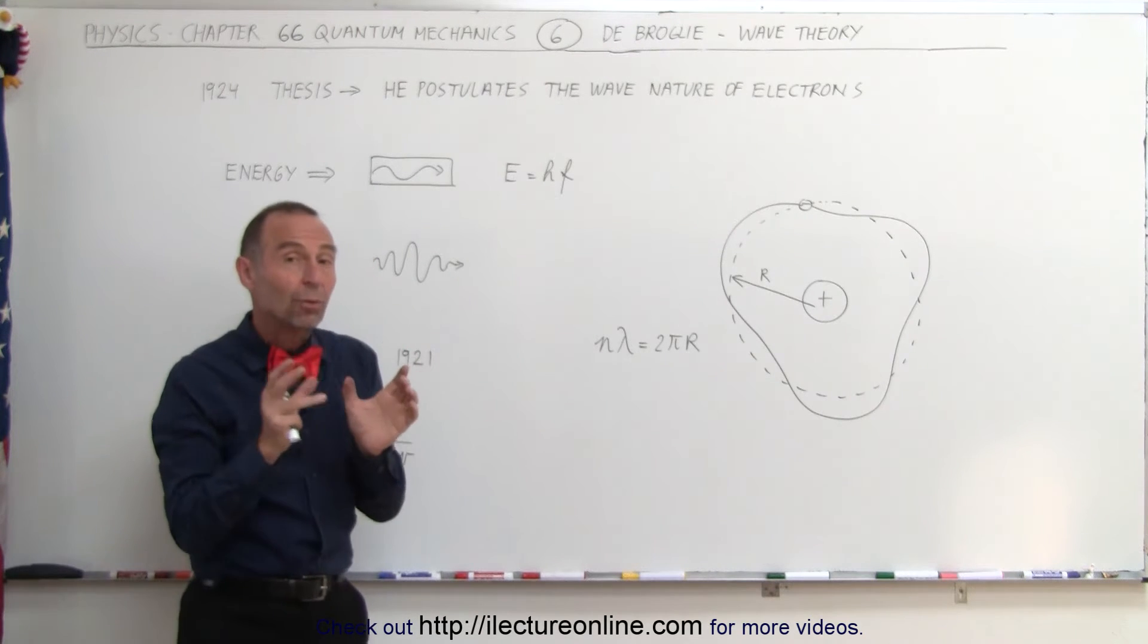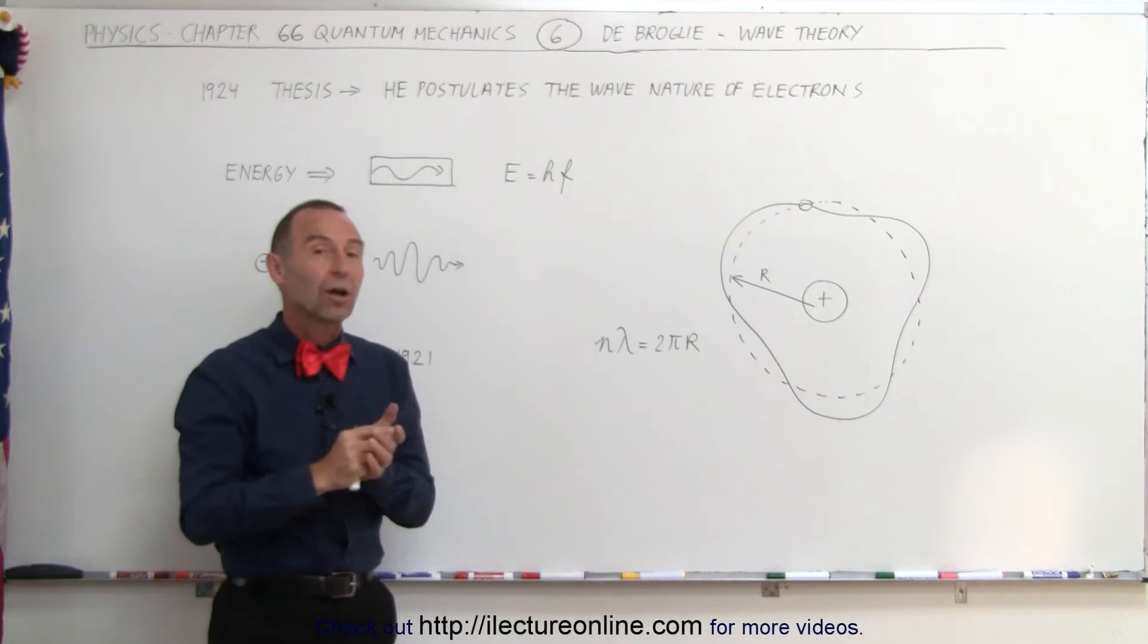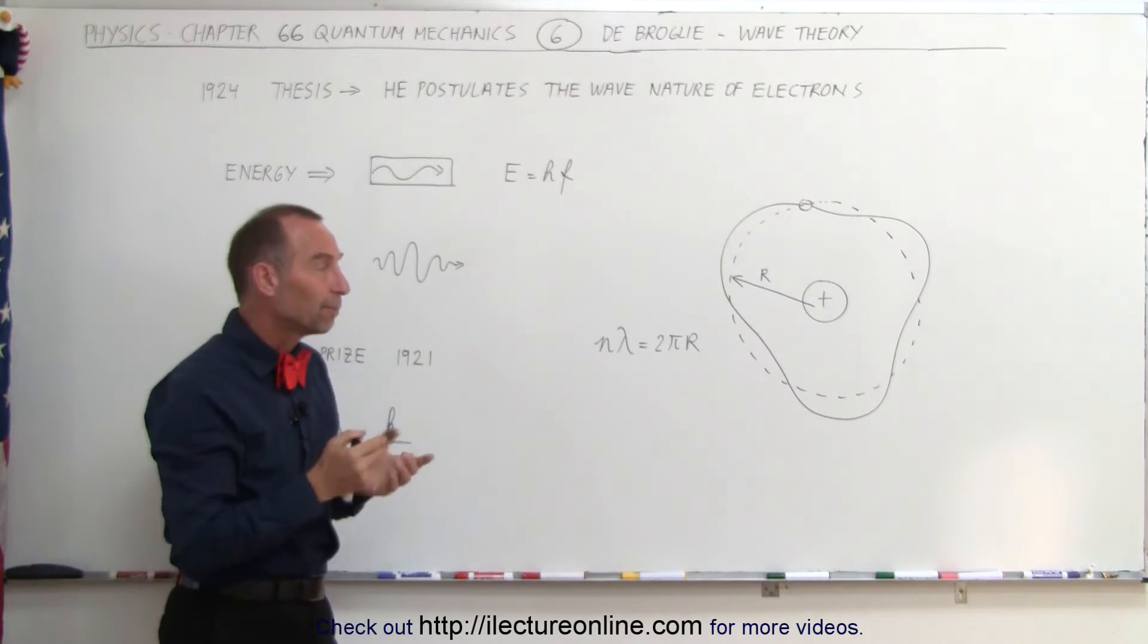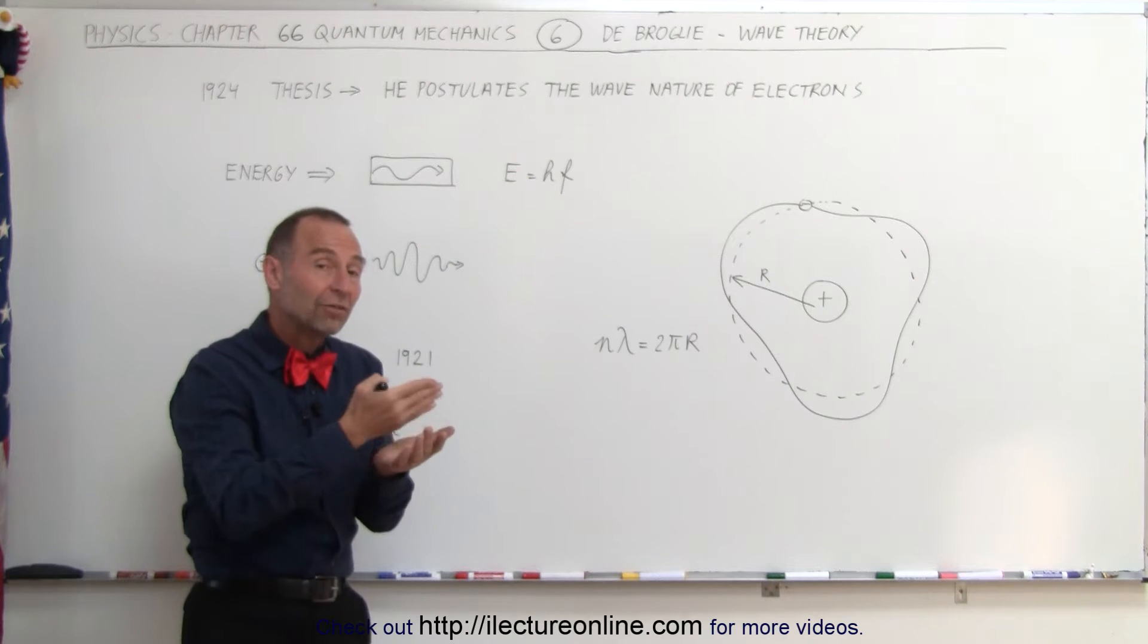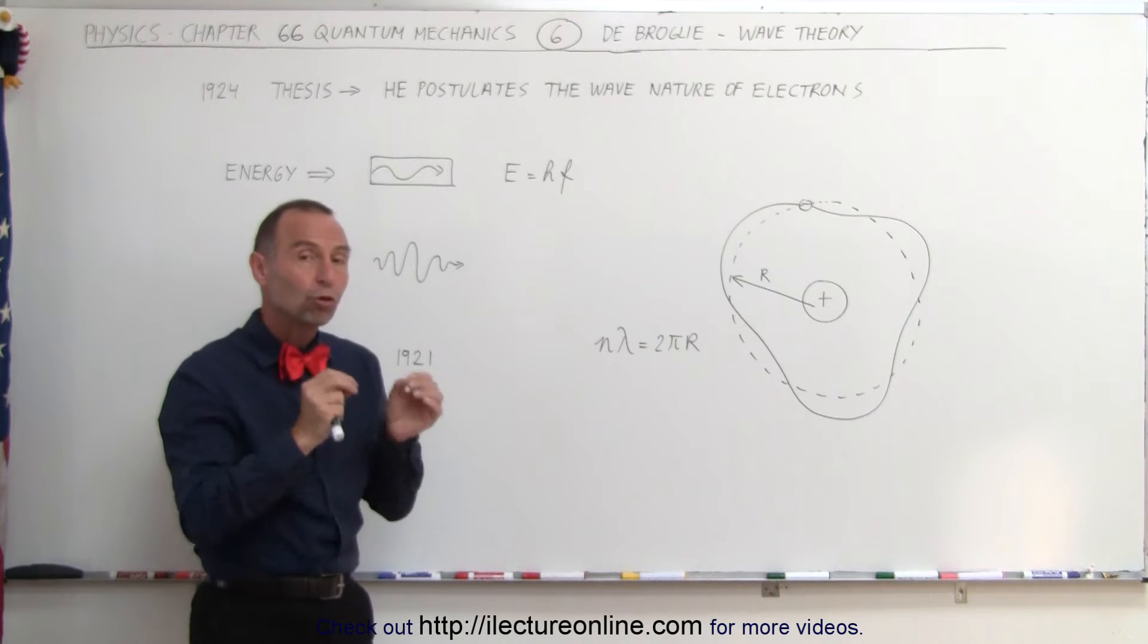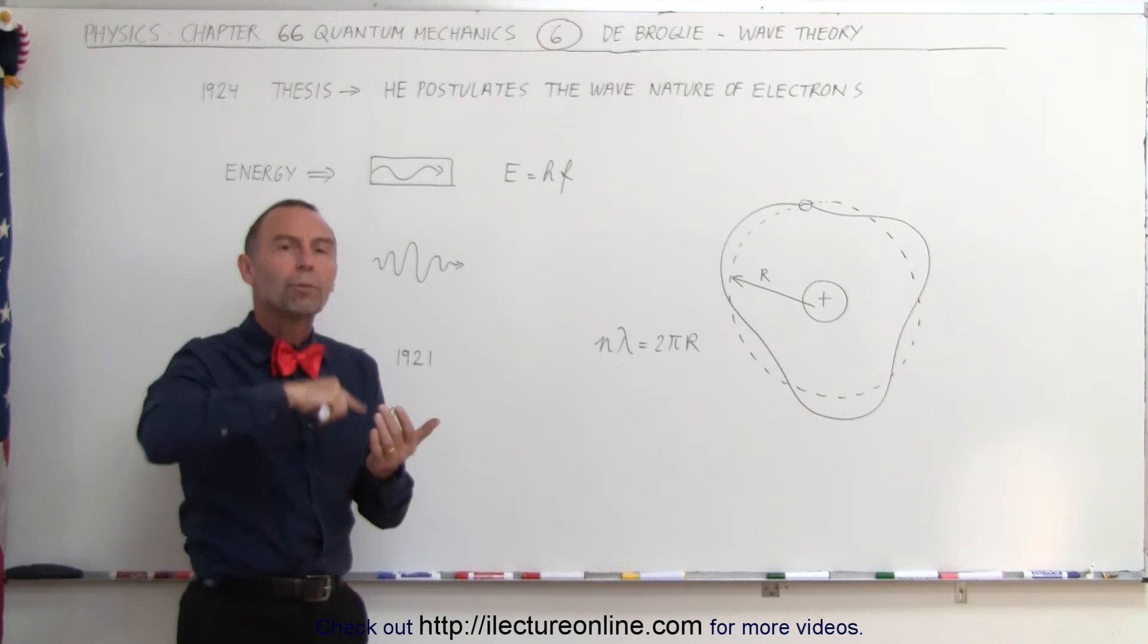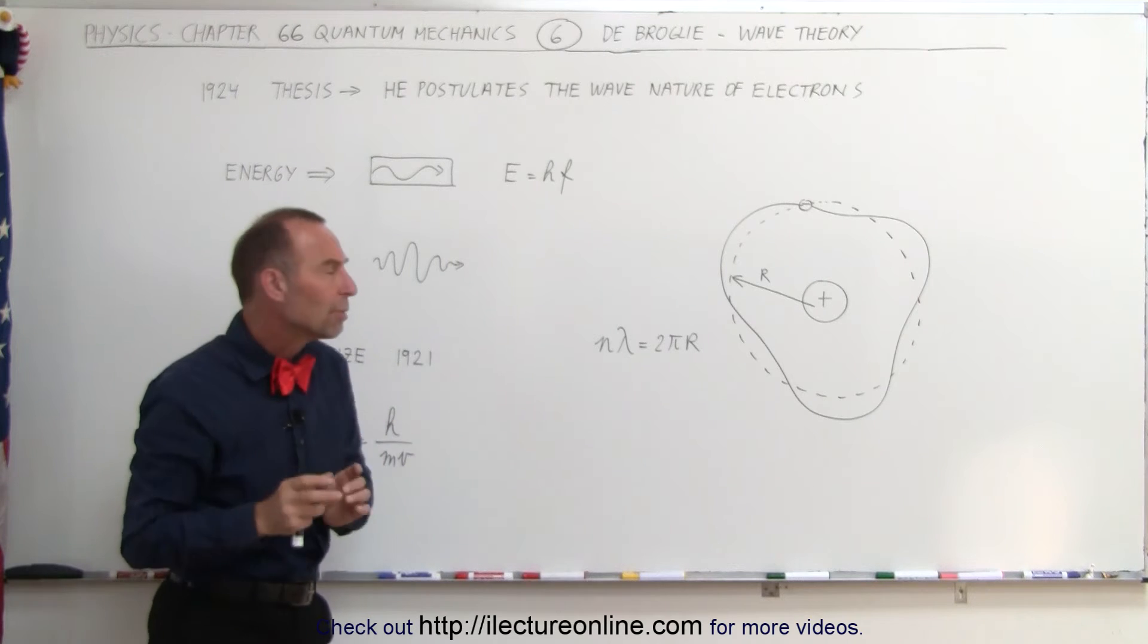For example, when the electron was in the innermost energy state, the orbit of an electron equaled one wavelength. If the energy state of the electron was the second energy level, then the orbit of the electron equaled two wavelengths. And if the energy state was at the third level, the orbit of the electron then equaled three wavelengths.